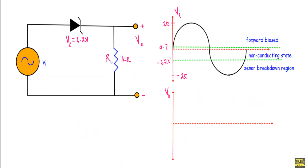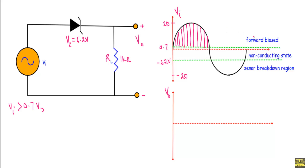This is our input voltage with the three different bias regions indicated. When Vi is greater than 0.7 volt, the Zener diode is in forward bias. From 0.7 volt to minus 6.2 volt, the Zener diode is in the off state. When Vi is less than minus 6.2 volt, the Zener diode operates in the Zener breakdown region.